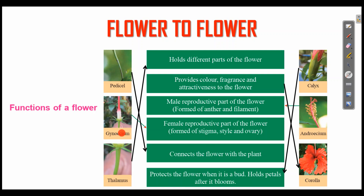Gynosium is the female reproductive part of the flower. The female reproductive part is formed of stigma, style, and ovary.